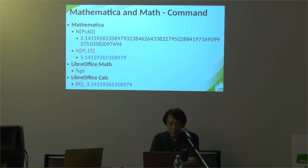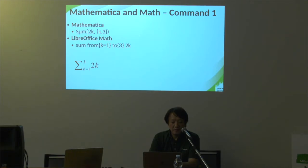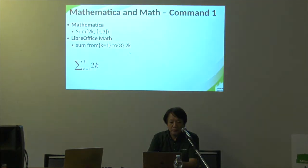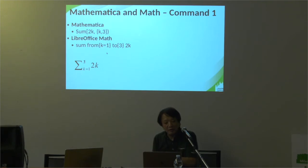The Mathematica command for pi is here. And the LibreOffice Math command is %pi. Both commands are very similar. Mathematica uses: Sum[2k, {k, 1, 3}]. LibreOffice Math uses: 'sum from k equal 1 to 3 of 2k'. So it's easy to convert between them. I'm working on an app to convert commands between Mathematica and LibreOffice Math.